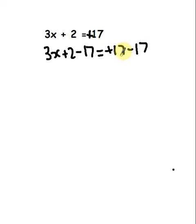And what you can see here is on this right hand side, the plus 17 take away 17 is going to equal 0. And here we have 3x plus 2 minus 17, so plus 2 take away 17 is going to be minus 15.